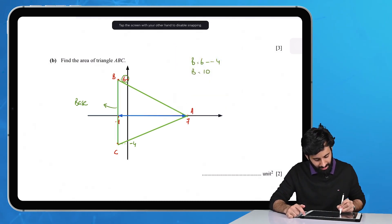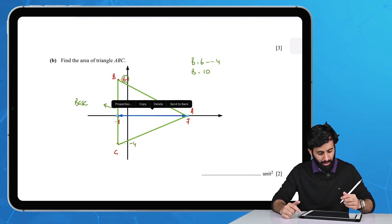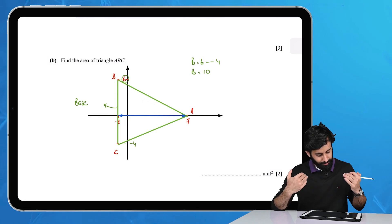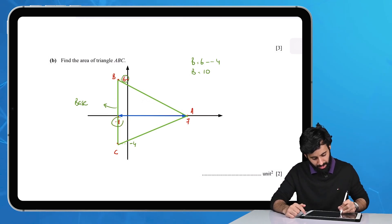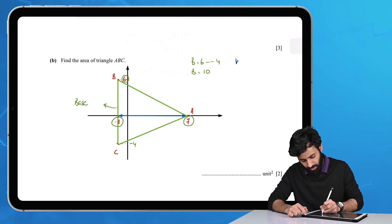As far as height goes, height theoretically is the perpendicular distance between your base and the highest point of the triangle. This is what the height is going to be. This length starts at -1 and goes to 7, so height equals 7 minus (-1), which means the height is 8.